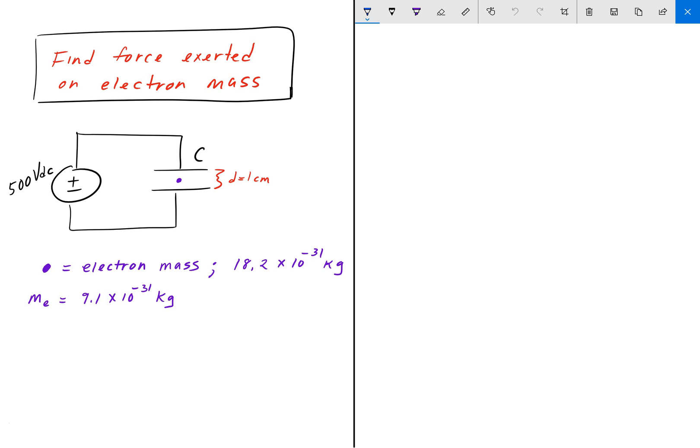Suppose that we have this mass inserted in between these two parallel plates and we apply 500 volts DC to the top plate. So we're applying positive charges to the top plate, therefore minus charges on the bottom plate.